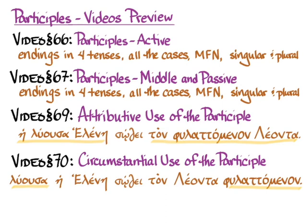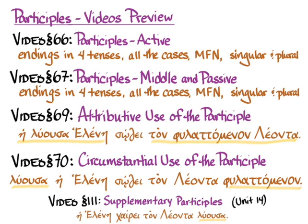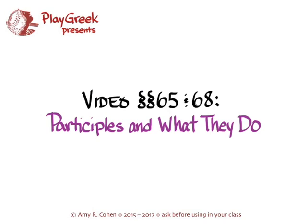Those are two of the three uses of the participle in Greek — the attributive use and the circumstantial use. Later, in section 111 (unit 14), we'll learn the supplementary use of the participle, for situations with certain verbs where we can say things like 'he Helene hairei ton leonta luousa' — 'Helen enjoys freeing Leo.' That's an overview of participles, what they do, and the whole Greek participle system as presented in Hanson and Quinn and in these videos.